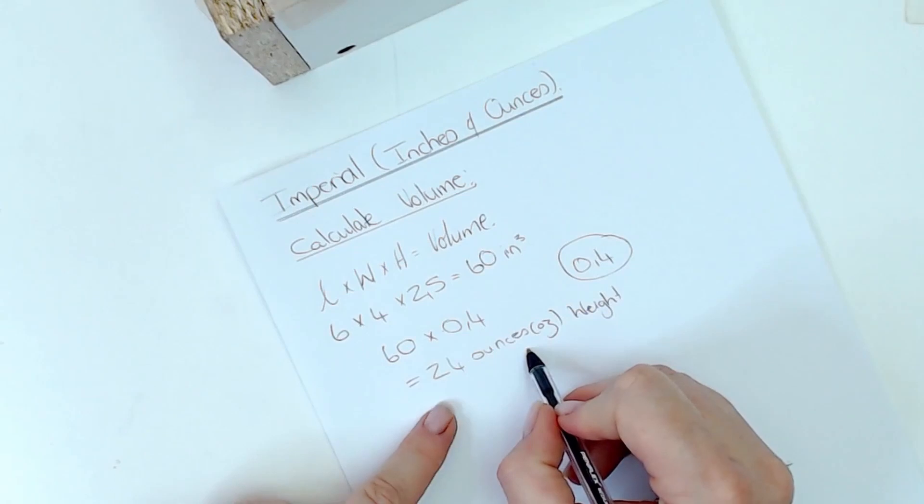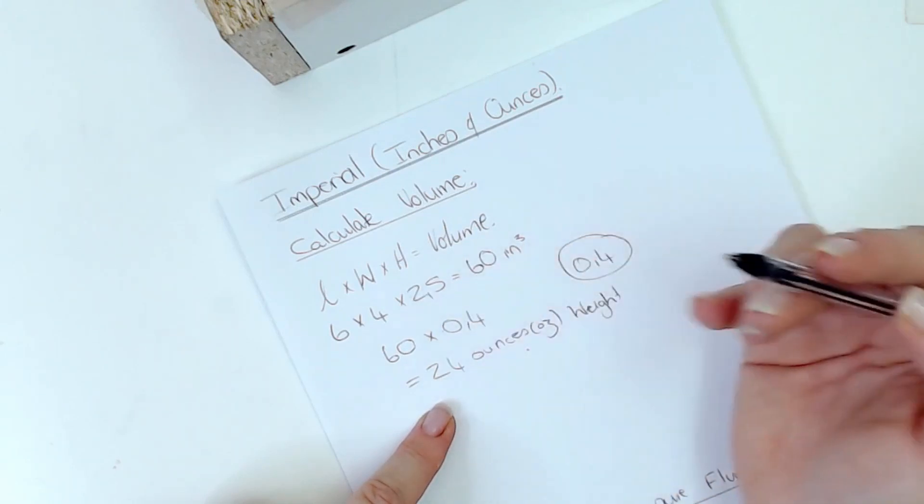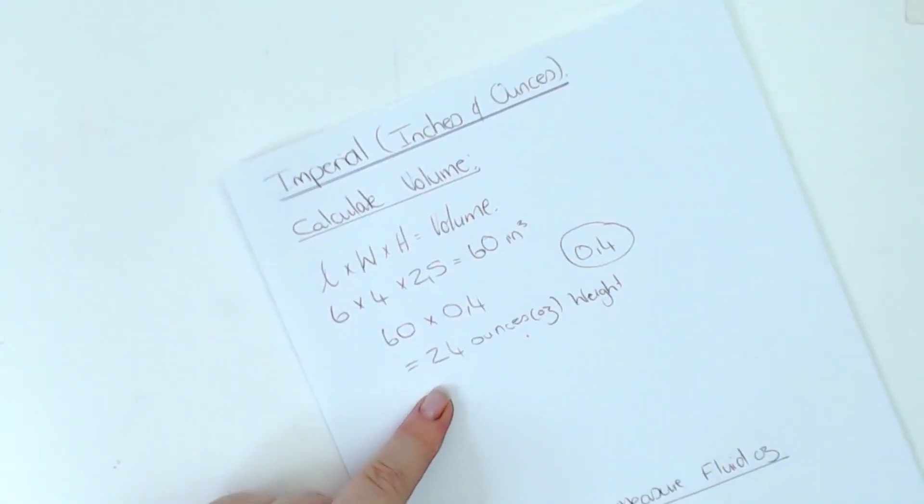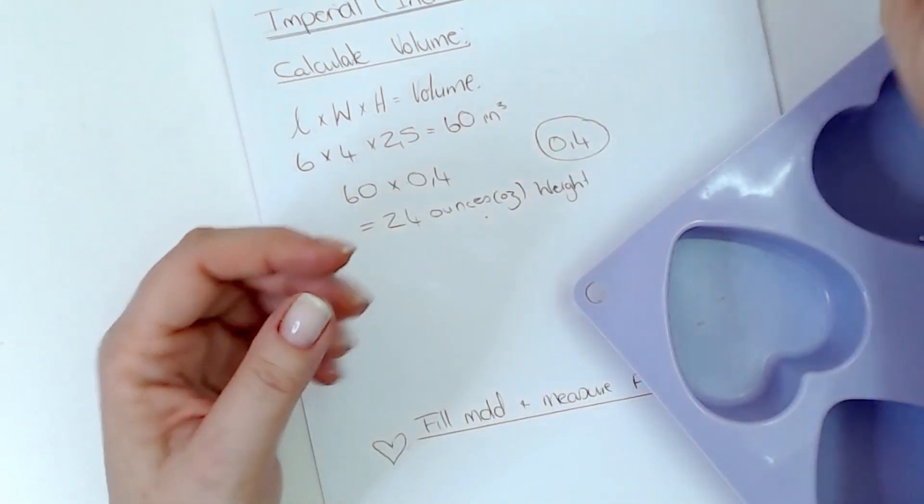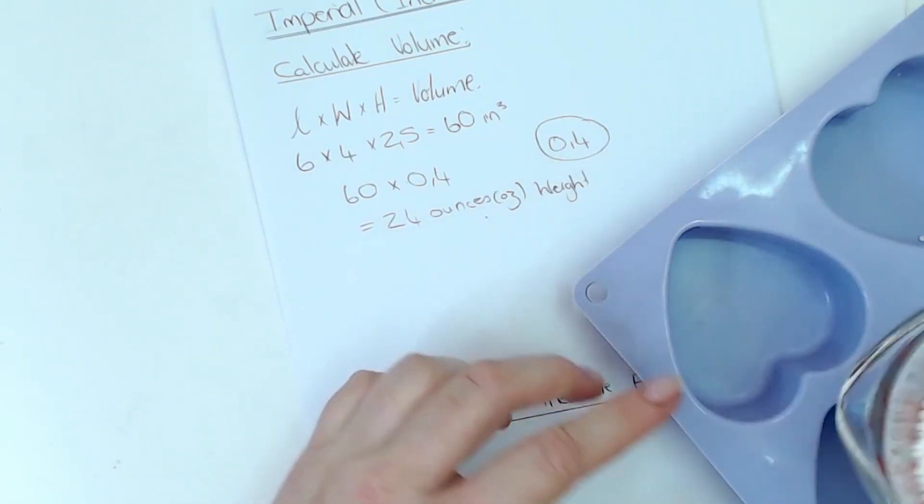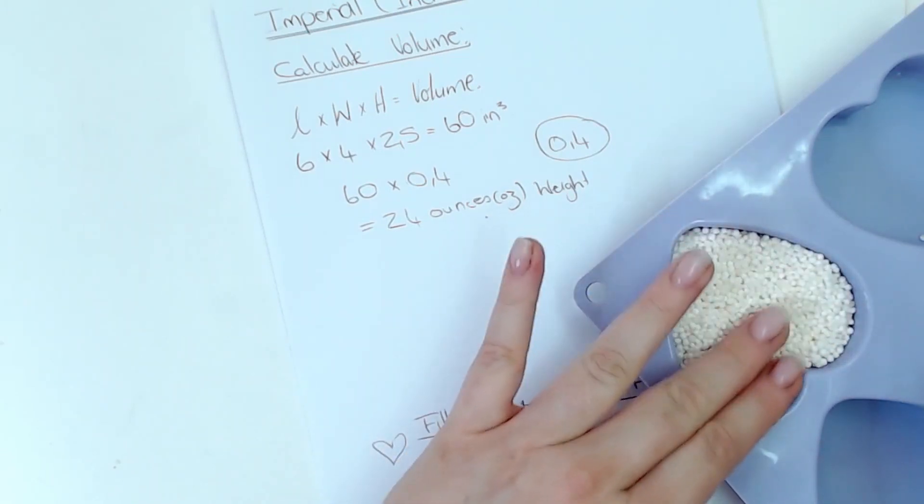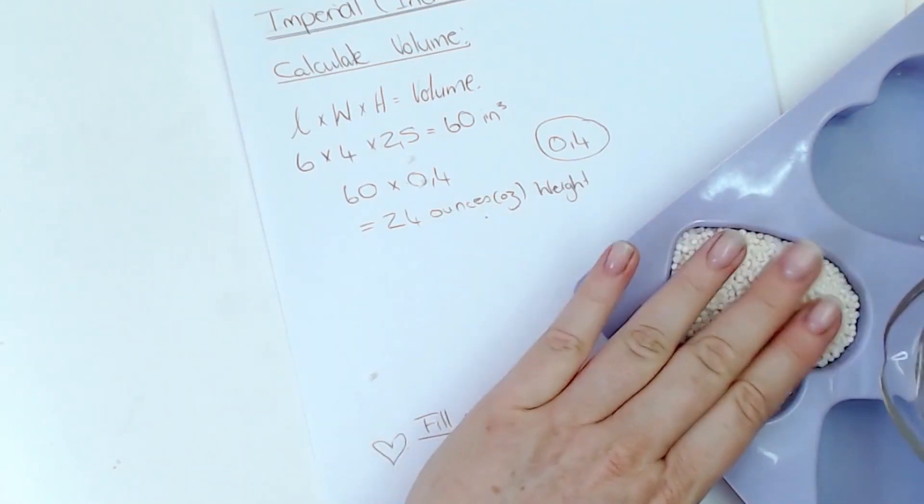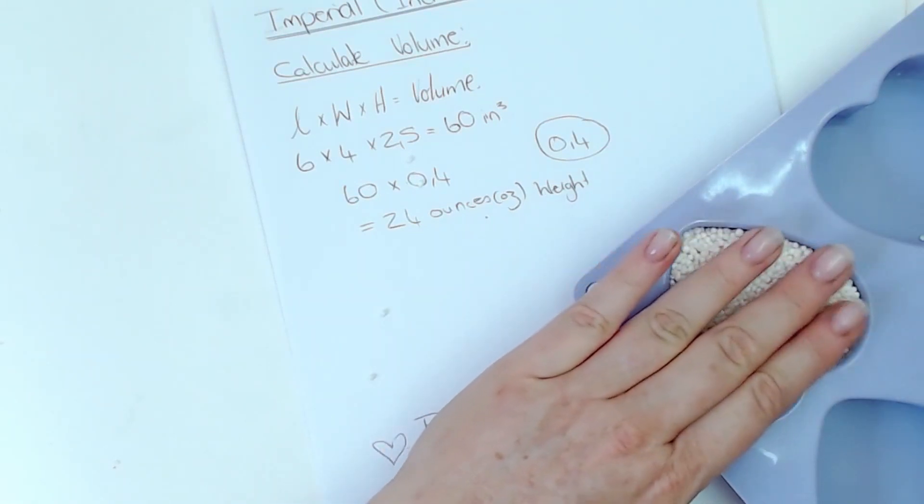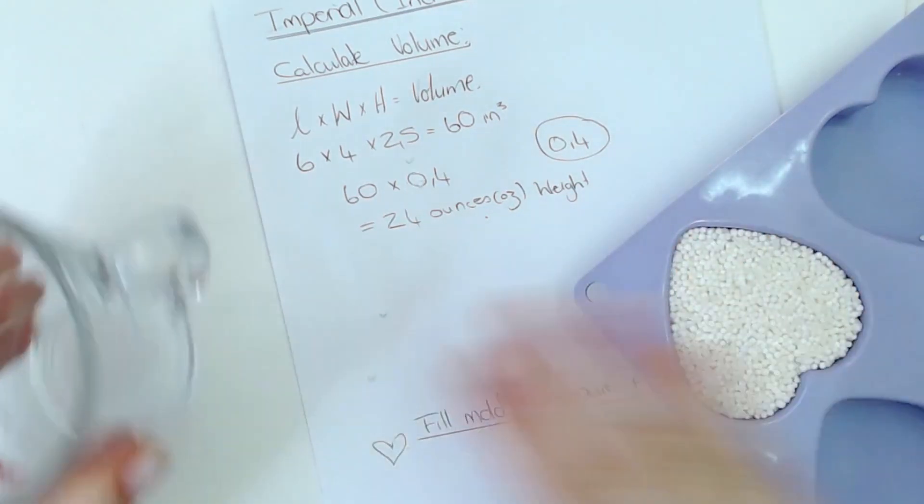So you will need 24 ounces of oil for your recipe to fill the specific mold to the level that I wanted to do it here. So this is your first method. Then the second method, this is for irregular shapes like my little heart mold here. What you're going to do is you're going to take your mold, you're going to put it down, you're going to take some rice or water, doesn't matter, whatever you like and whatever you've got at hand. We're just going to get the volume here and you're going to fill your mold to the level that you want your soap batter to fill it. So I've got here, I like to fill it to the tippy top, and I've already pre-measured this for the metric video so I've got the right amount here for my little mold.